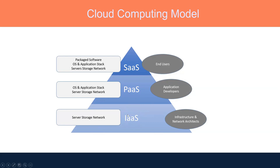If we don't require infrastructure but need a platform to host our services — for example, a PHP website — we can use Platform as a Service (PaaS). We can purchase an Apache server or similar platform from the service provider and host our application there. If we don't require infrastructure or a platform, we can go for Software as a Service (SaaS) — we require just the application itself.